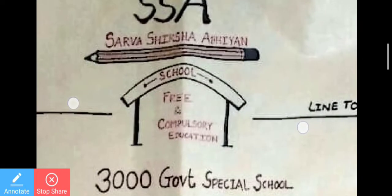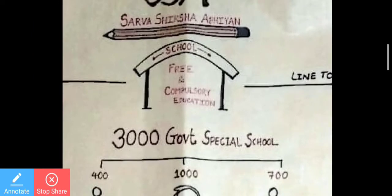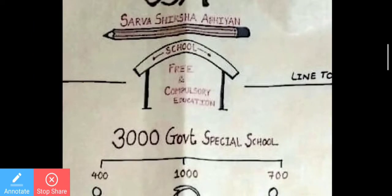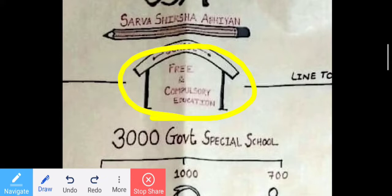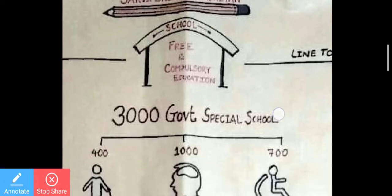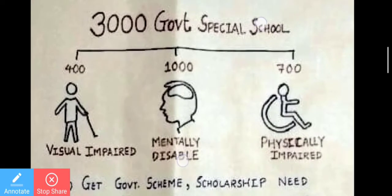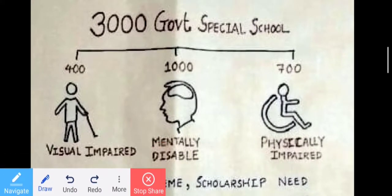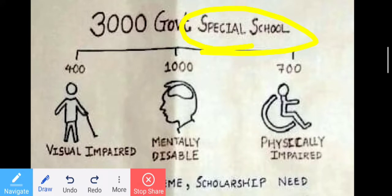Now, SSA — Sarva Shiksha Abhiyan. I want to tell you about free and compulsory education. According to SSA, 3,000 government special schools were opened — that is, special needs schools for handicapped and disabled children.